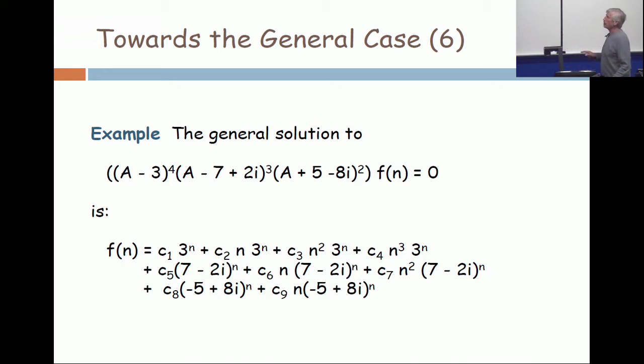A minus seven plus two i is a factor. So the root is seven minus two i, and that's a root of multiplicity three. So there are three terms in the basis that correspond to that: (7-2i)^n, n(7-2i)^n, and n^2(7-2i)^n.